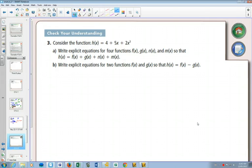So here we have a function h(x) = 4 + 5x + 2x³. We need to write explicit equations for four different functions so that h(x) is equal to four different ones.